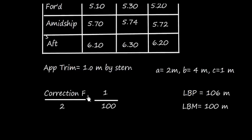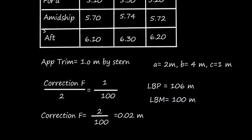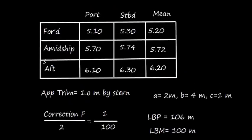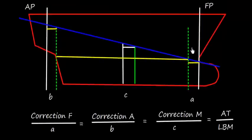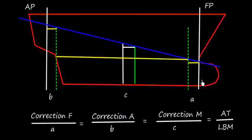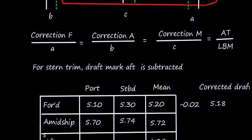Correction to the forward draft: using the formula, correction divided by a equals apparent trim divided by LBM, so correction = a × (apparent trim / LBM) = 2 × (1/100) = 0.02 m. This correction needs to be subtracted from 5.20 m to get the corrected draft of 5.18 m. The thumb rule: for a stern trim, if the draft mark is aft of the perpendicular, subtract the correction.